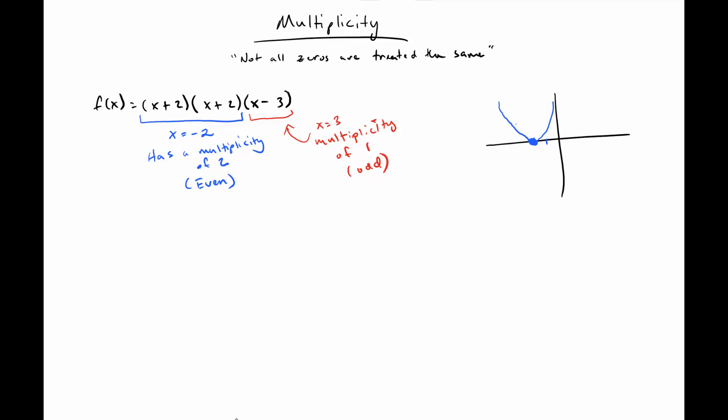However, if the multiplicity is odd, like this one is, what you end up with is something that looks more like a cubic function, but it goes right through it. So we have that zero at x equals three, and it's going to travel right through.